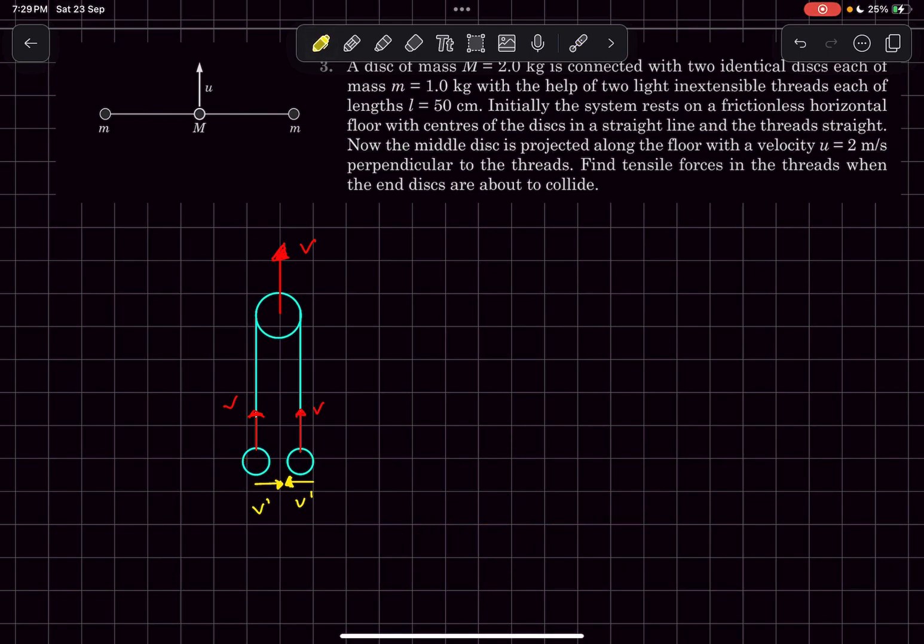Now we are going to conserve the momentum in the positive y direction. Initially only capital M, so the initial momentum of the system is going to be capital M times u. Finally all these three masses are going to be moving with the same velocity. So finally it's going to be capital M plus 2m times v, and from here we can directly get the value of v.